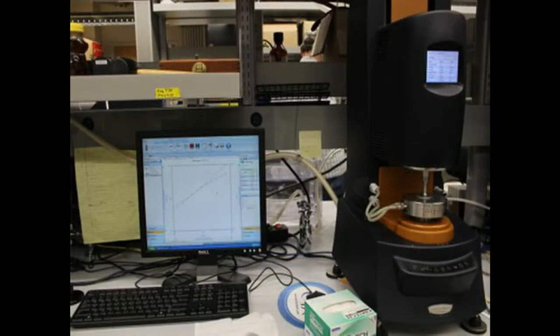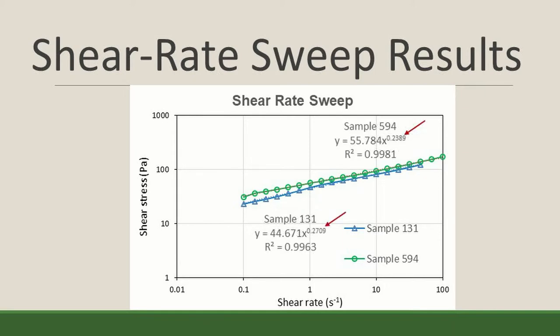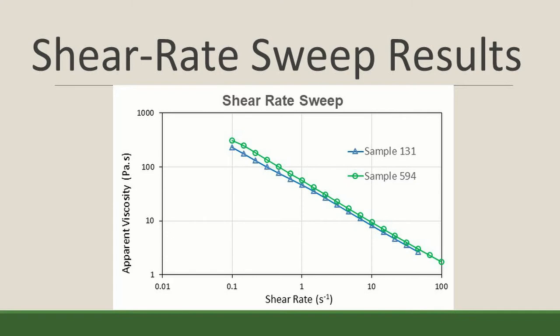Next, we performed a shear rate sweep on a DHR-3 rheometer to determine if we could fit these samples to a model. This test increased the shear rate being experienced by the sample gradually, and measured the resistance provided by the sample in Pascals. The graph plots shear rate against shear stress, and shows that both samples fit the power law model the best, with shear thinning behavior indicated because the exponent, or n, was less than 1. With a shear rate sweep, we also get an apparent viscosity against shear rate graph, and we can see that both samples are shear thinning, and that 594 does indeed have a higher viscosity.